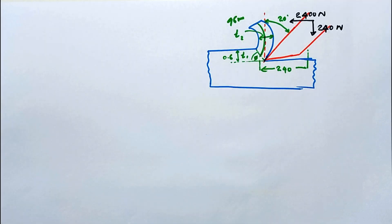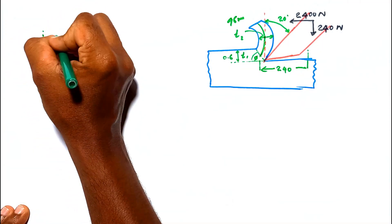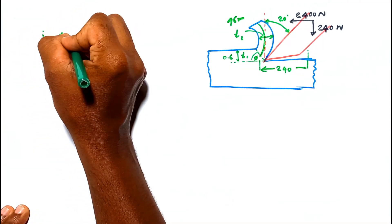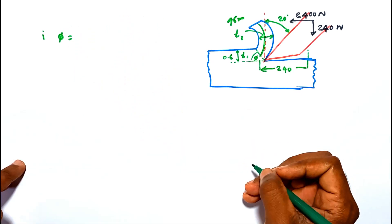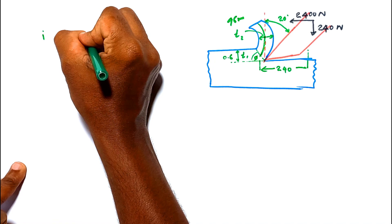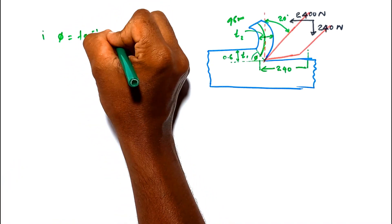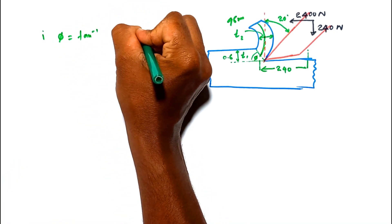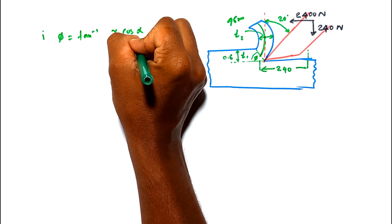For the first question, the problem asks for the shear plane angle φ. We have the equation: φ equals tan inverse of r cos α divided by 1 minus r sin α.